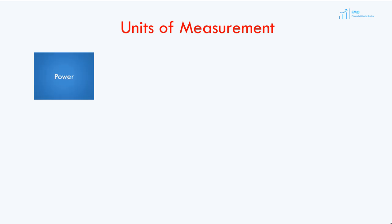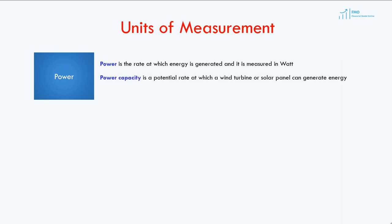Power is the rate at which energy is generated, and it is measured in watts. Similarly, power capacity is the potential rate at which a wind turbine or solar panel can generate energy. Home appliances consume energy in the magnitude of watts and kilowatts — one kilowatt is 1,000 watts. Large industrial factories consume energy in the magnitude of megawatts, and one megawatt is one million watts.